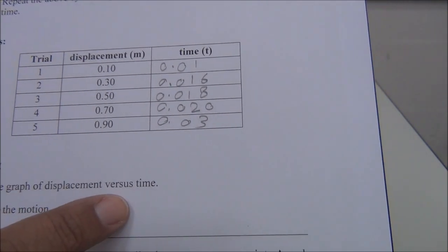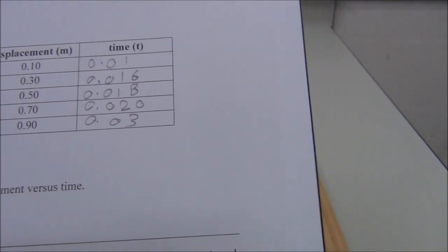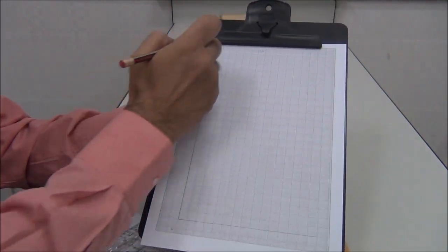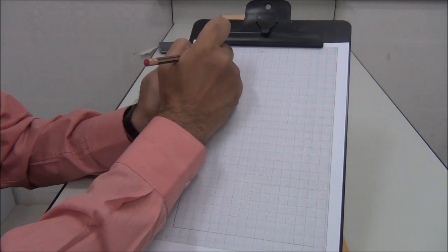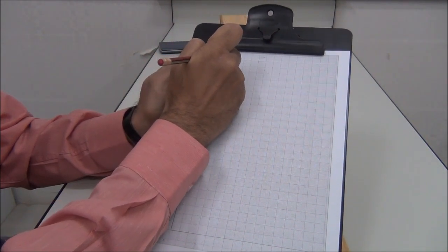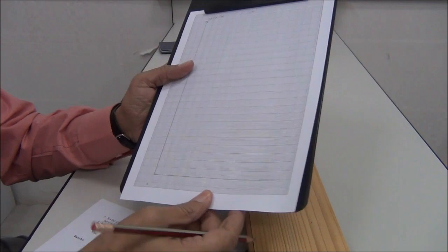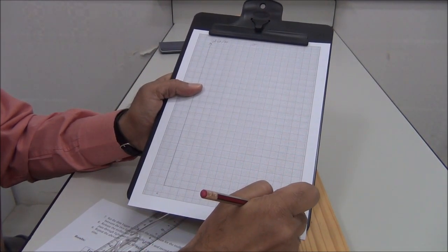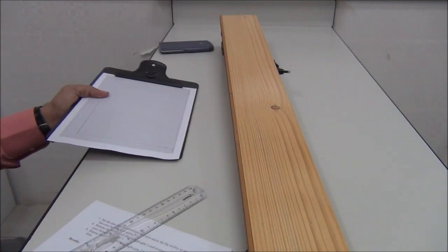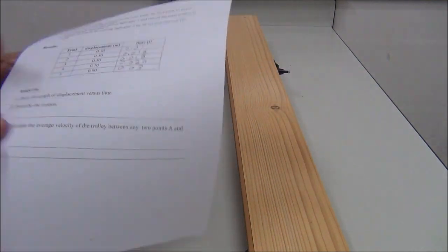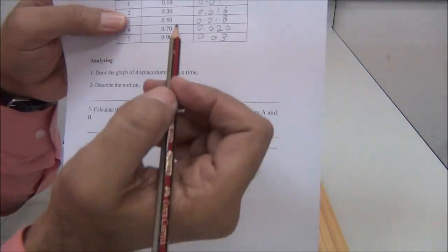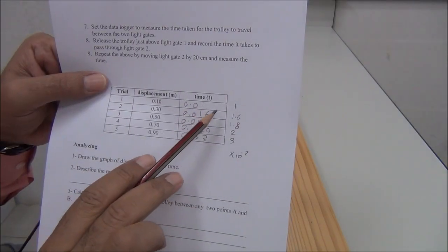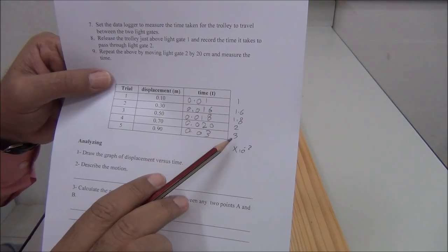Now we draw the graph of displacement versus time. We plot the graph with displacement in meters on the y-axis and time in seconds on the x-axis. Because the time is very small, we can multiply by 100, so it becomes 1, 1.6, and so on.